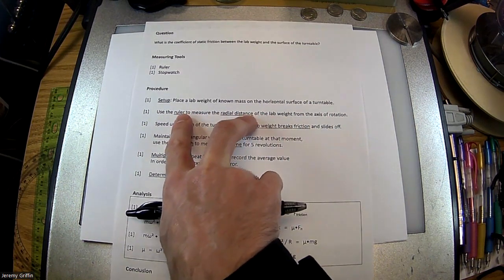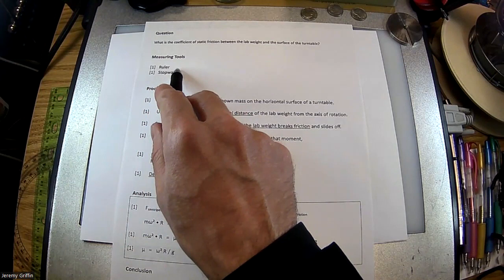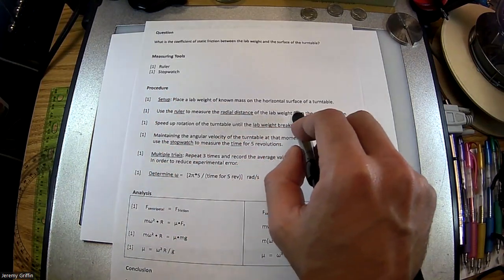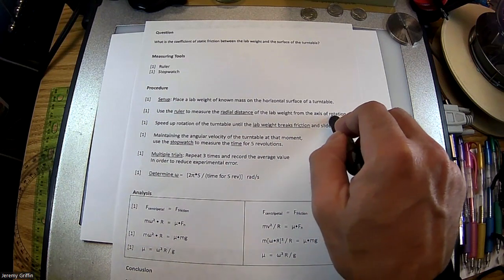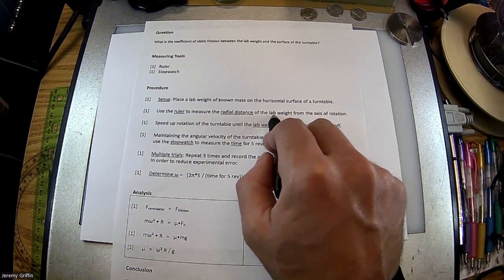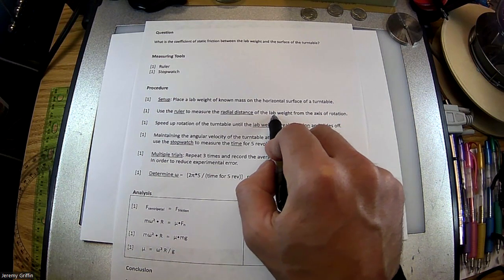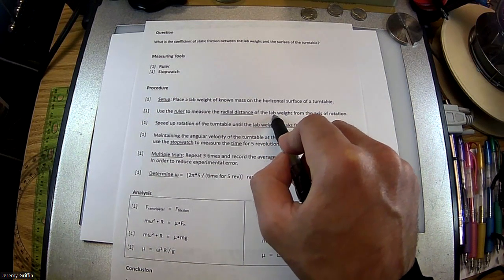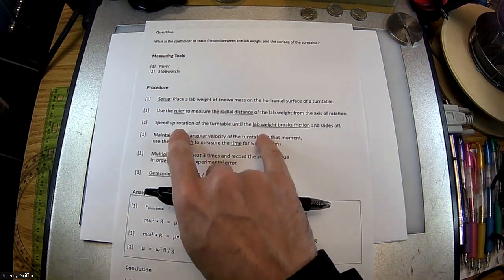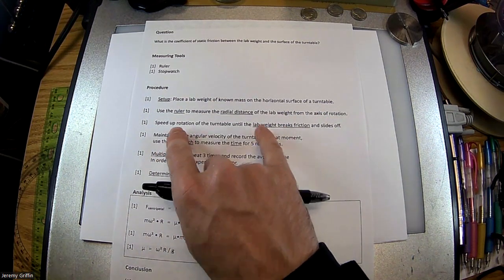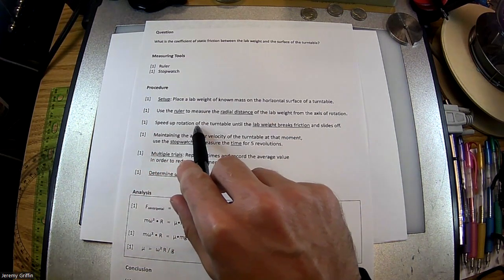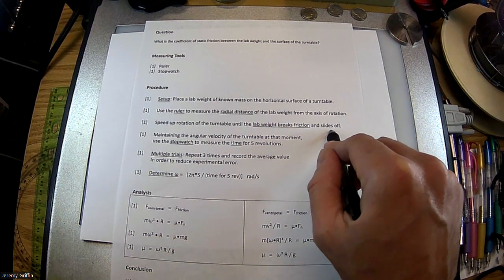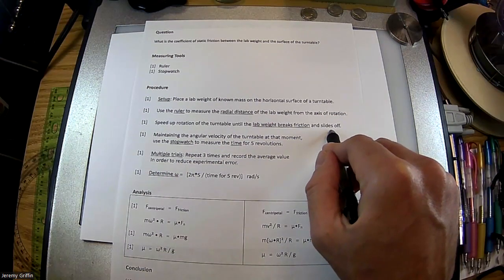All right. You guys know the procedure. You have to mention what you used each measuring tool to measure. So use the ruler to measure the radial distance of the lab weight from the axis rotation. There may be just slightly different ways to word that, but you'd have to get that measurement. All right. That's going to be R. Just give yourself a point for that. All right. Next up, I have a kind of a procedural point. Like, speed up the rotation of the turntable until the lab weight breaks friction and slides off. All right. Now, I think, okay, Nathan, I think you told me you had an alternate version. What did you say you did?